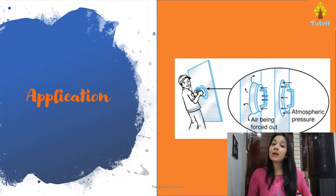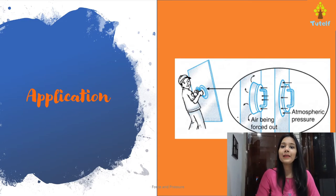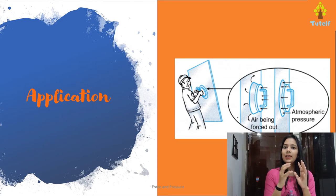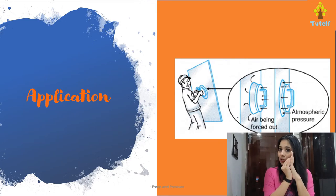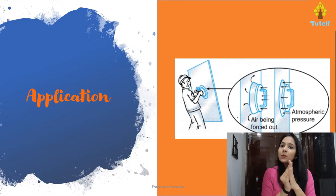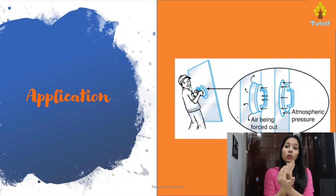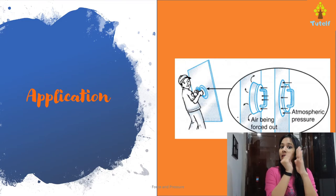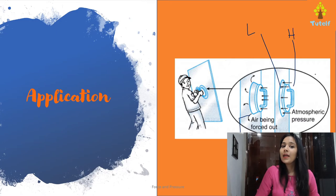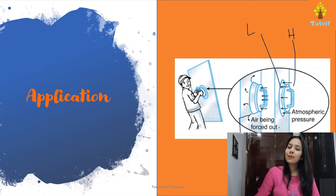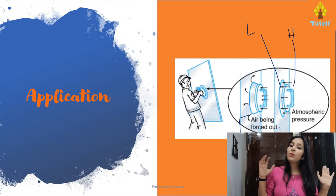Next we have the sucker. You will see the sucker is used in many games and also to hang things on walls. What happens here? You push the sucker to the wall, and as you push it, the air particles are removed from inside. The particles are reduced, the force is reduced, the atmospheric pressure inside is reduced — so inside it is low pressure. The atmospheric pressure outside is higher than inside, so the sucker sticks to the wall. When the air is forced out, inside will be low and outside will be high, so it gets stuck to the wall.